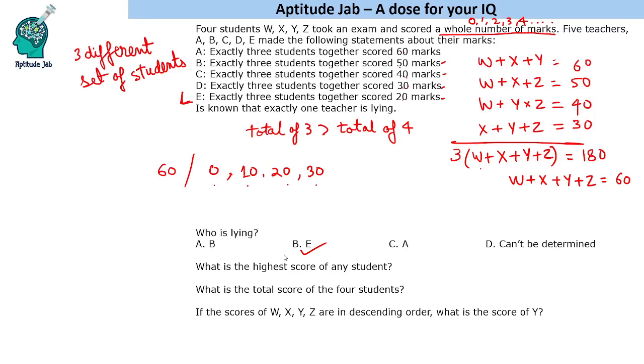The next question: what is the highest score of any student? The highest score is 30. What is the total score? Total score is 60. If the scores of W, X, Y, Z are in descending order, what is the score of Y? Score of Y will be 10. That's the solution. If you loved solving this, please do like the video.